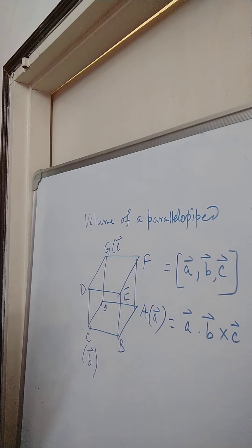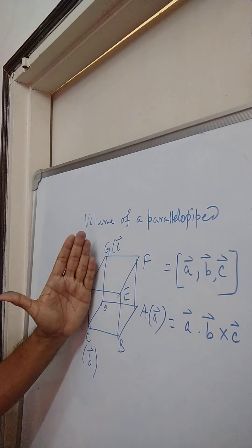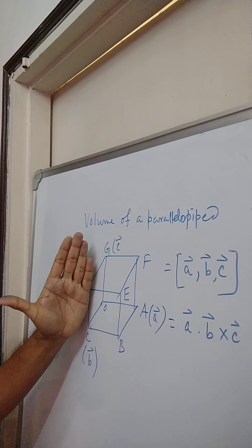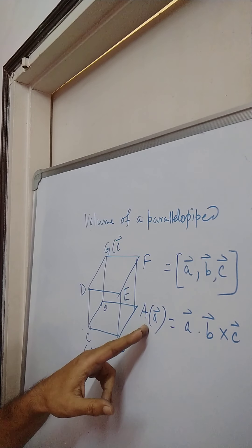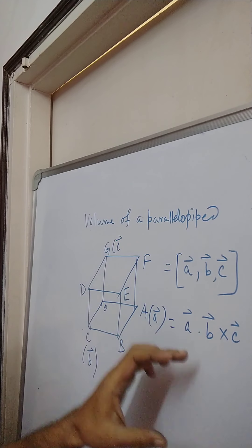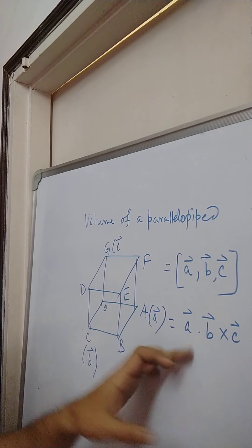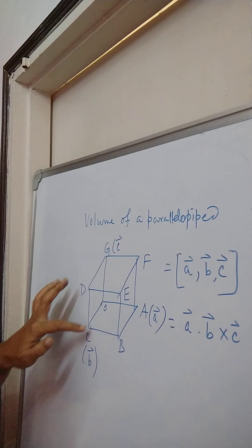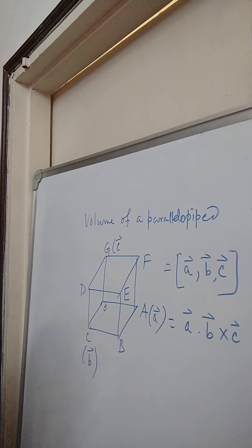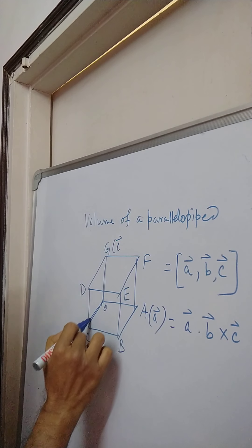Now see, what is B cross C? B cross C is the area of this plane. And we stack this plane A times, A is the length of this vector, and we take the dot product. So you can easily apprehend how many times this area B cross C is stacked. It is obviously A dot B cross C.